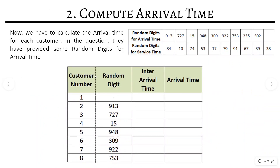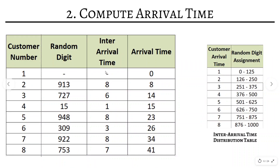Now moving to the second step — calculating the actual arrival time for each customer. Since we simulate for 8 customers, we have 8 rows. We assign the random digits given in the question to each customer sequentially. We always assume the first customer arrives at time 0, so no random digit is assigned to it. For further customers, we assign the random digits sequentially. The first customer's arrival time is 0.